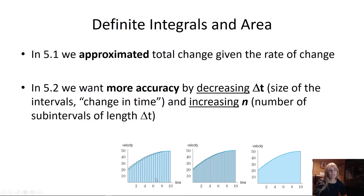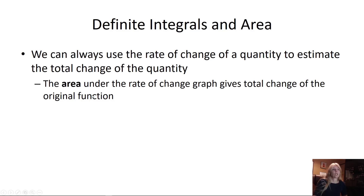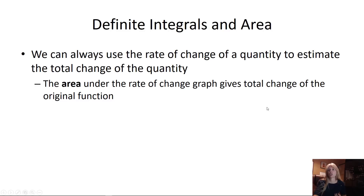If you're taking a reading every two seconds, why not take it every second, every half second, every quarter second, and so on — until we get to the calculus part. The area we're finding is under the rate of change, and that gives us the total change from the original function.